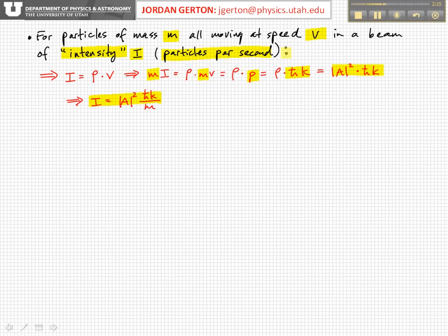If you think about it, the number of particles per unit time I equals the number of particles per unit length times the velocity of each particle. If we multiply both sides of this equation by the mass of the particles m, then we get mI = ρ × mv, and mv is just the classical momentum p, which is also by de Broglie's relationship ℏk.